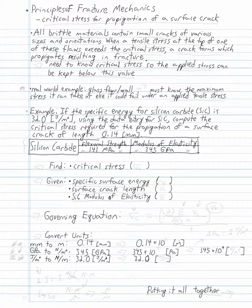Principles of Fracture Mechanics: Critical Stress for Propagation of a Surface Crack. All brittle materials contain small cracks of various sizes and orientations. When a tensile stress at the tip of one of these flaws exceeds the critical stress, a crack forms, which propagates, resulting in fracture.